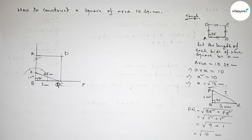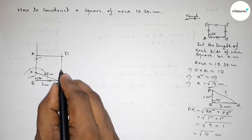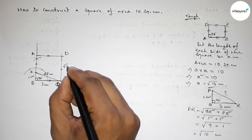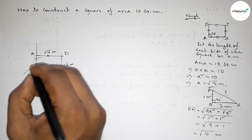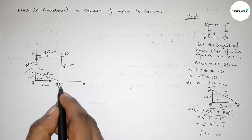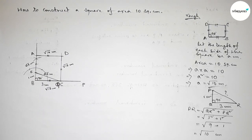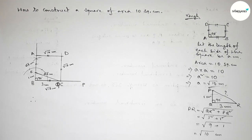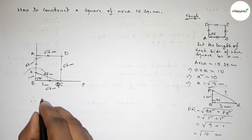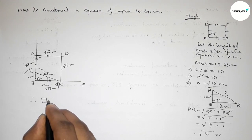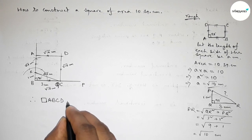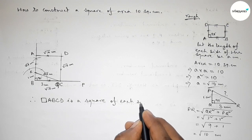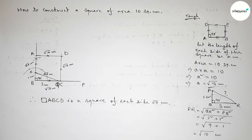Joining these lines, we get our square. Taking points D and A to label the vertices, all four sides — this line, this line, this line, and this line — are equal, each equal to √10 centimeters. Therefore, rectangle ABCD is confirmed as a square with each side equal to √10 centimeters. We have obtained the required square of area 10 square centimeters.